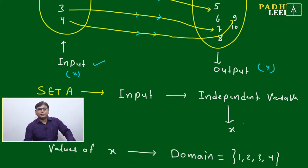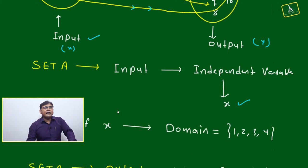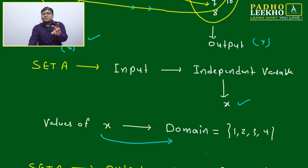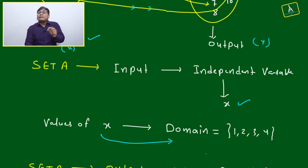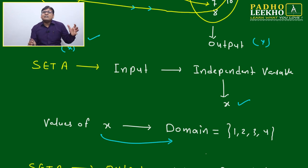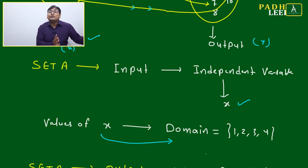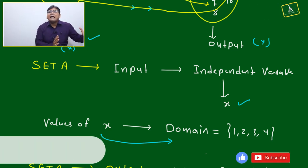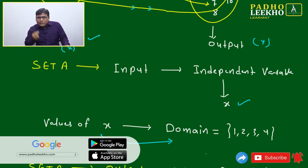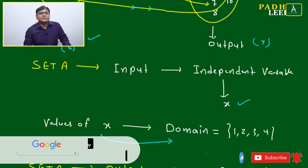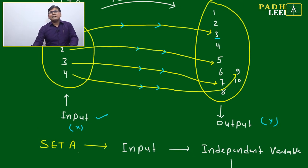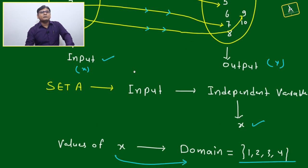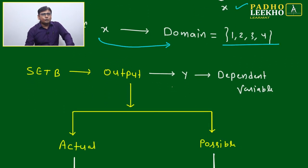Set A is your input, that is your independent variable — the values of x — and this is called the domain. Two types of questions sometimes come: one is the value of the independent or dependent variable, and sometimes the question asks for the number of elements in set A and set B — how many elements are in the domain, how many in the range, how many in the co-domain. The values of x — {1, 2, 3, 4} — that is called the domain.